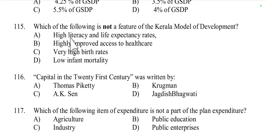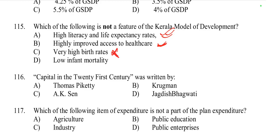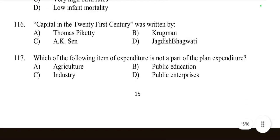Question 115: Which is not a feature of the Kerala model of development? High literacy and life expectancy rates — yes. Improved access to healthcare — yes. Very high birth rate — this is not a feature; Kerala has a low birth rate. Low infant mortality rate — yes. Option C, very high birth rate, is not a feature of the Kerala model of development.